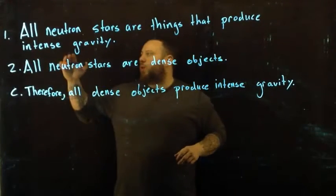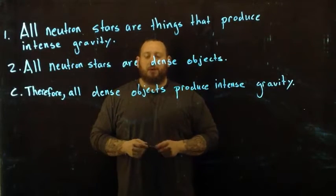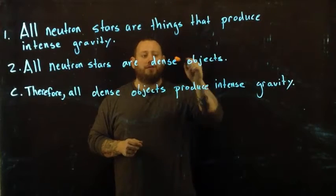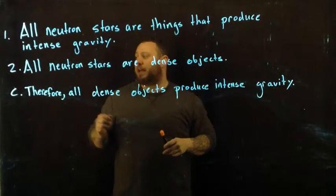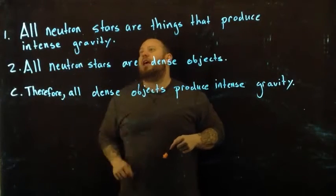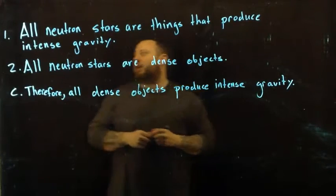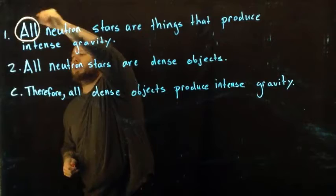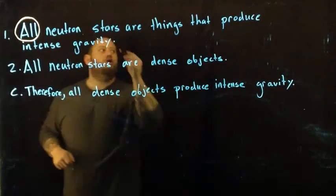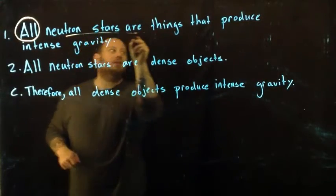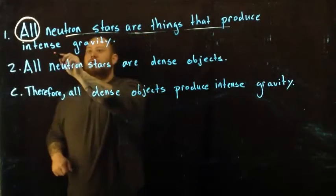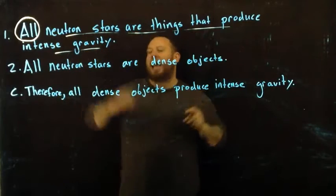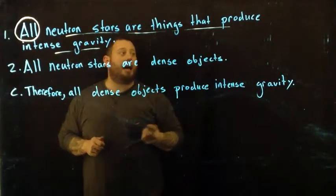I'm going to provide a little bit of an easier process in determining validity. First, we need to go over why this is a categorical syllogism. It's a categorical syllogism because it has two premises and a conclusion, and all of the things in it are categorical statements. We have an 'all' statement — neutron stars are things that produce intense gravity — and this is our first premise, a categorical statement of type A.